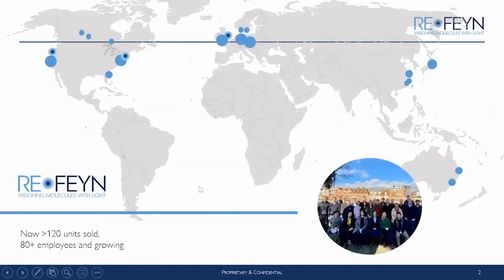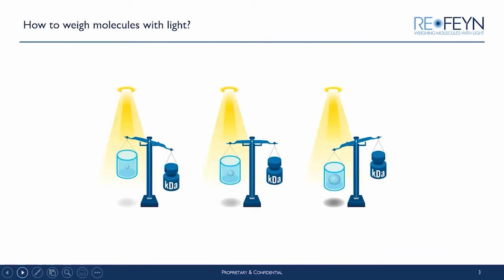A little bit more about us. Our headquarters are based in Oxford in the United Kingdom, and we also have premises in Boston and in Portland, Oregon. Although we are a young company, we have nevertheless supplied and sold over 120 instruments all around the world. We're growing very rapidly — approximately 80 employees currently, but we're looking to double our headcount within the next 12 months.